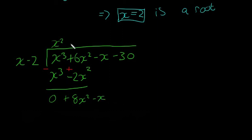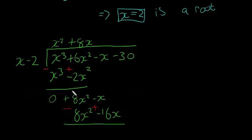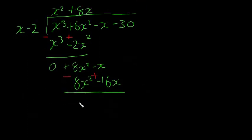x into plus 8x squared is going to be plus 8x. Multiply that out, we're going to be getting 8x squared minus 16x. We're going to change this to red, we're going to be minus, plus, back to green. It's going to be 0, plus 15x, minus 30.